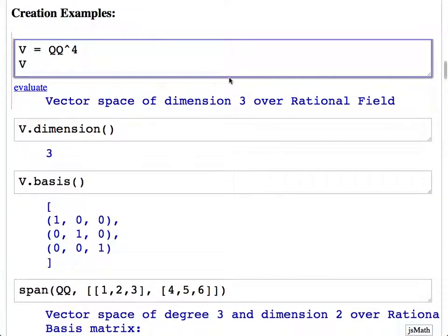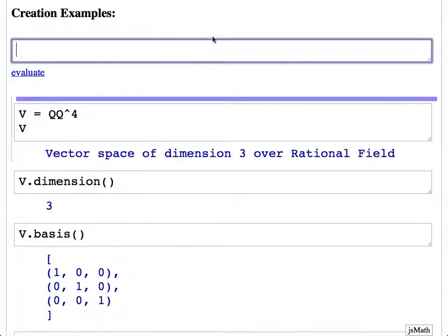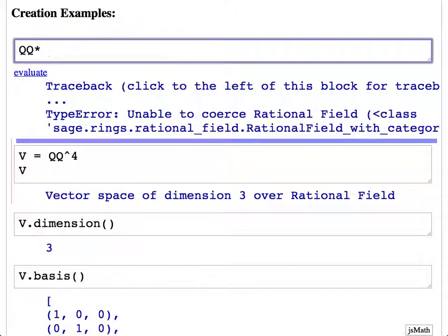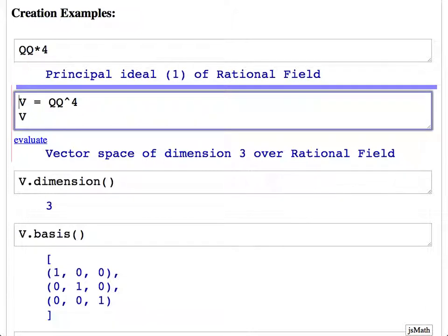Continuing with our demonstration of vector spaces. Would you get the same thing if we multiplied it four times? I think multiplication isn't defined. I don't think there's any notion of qq times qq. Nope. Or qq times four. Actually, that makes the ideal generated by four.